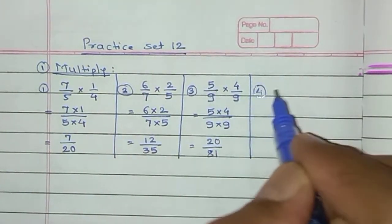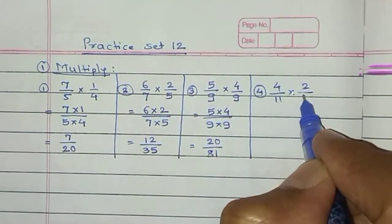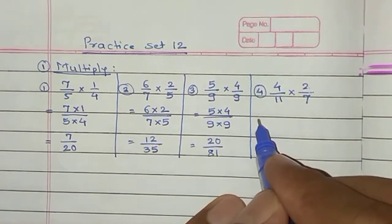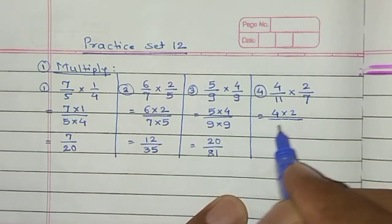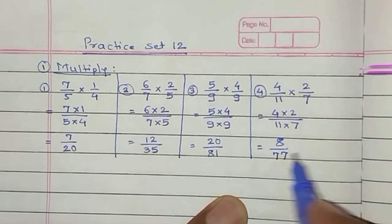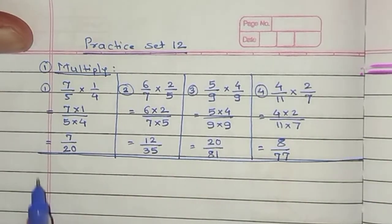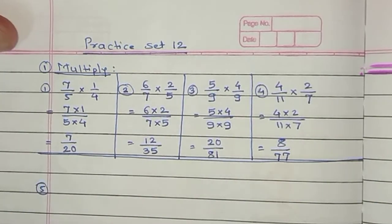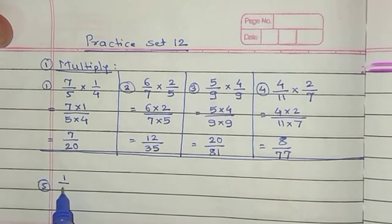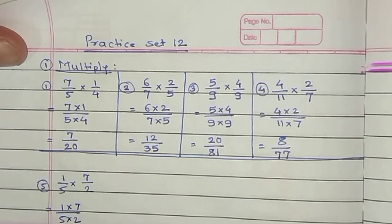Example number 4 is 4/11 multiplied by 2/7. Is equal to numerator multiplied by numerator upon denominator multiplied by denominator. Is equal to 4×2=8 upon 11×7=77. Can we reduce it? No. So this is our final answer: 8/77. Example number 5 is 1/5 multiplied by 7/2. Is equal to 1×7=7 upon 5×2=10. We cannot reduce this fraction. Answer: 7/10.